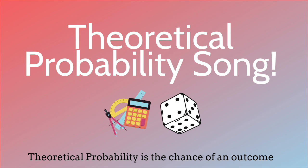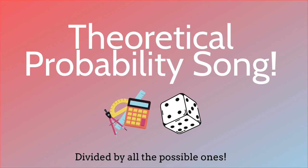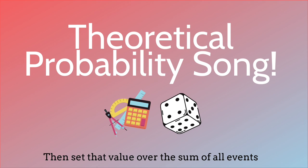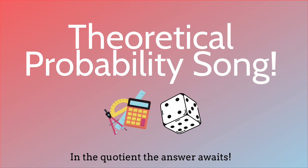Theoretical probability is the chance of an outcome divided by all the possible ones. To find a theoretical probability, find out all the ways your outcome could take place, then set that value over the sum of all events. In the quotient, the answer awaits.